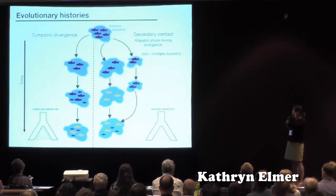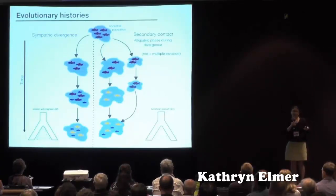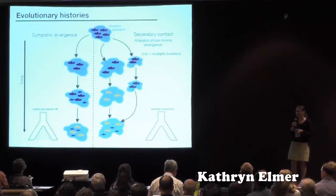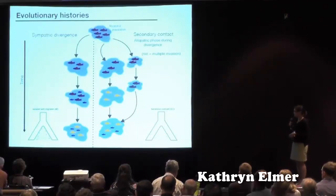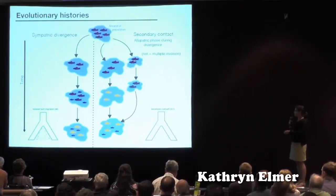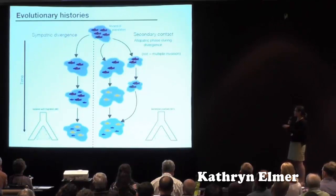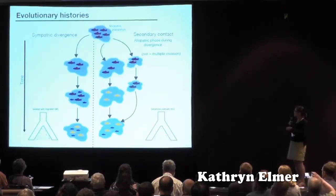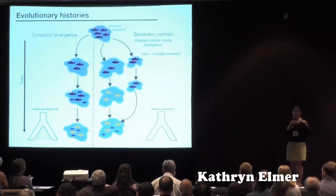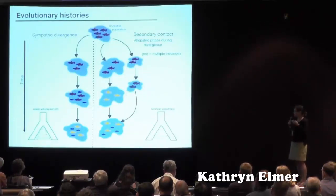We tested many different models of evolutionary history to ask whether we were comparing apples to apples when looking at parallelism, or whether these populations were overcoming many different non-parallel histories. The two main models I'll focus on are isolation with migration — true sympatric speciation where divergence arises overcoming gene flow — and secondary contact, which is quite common in post-glacial fishes, where there's a period of allopatry followed by admixture and again divergence.